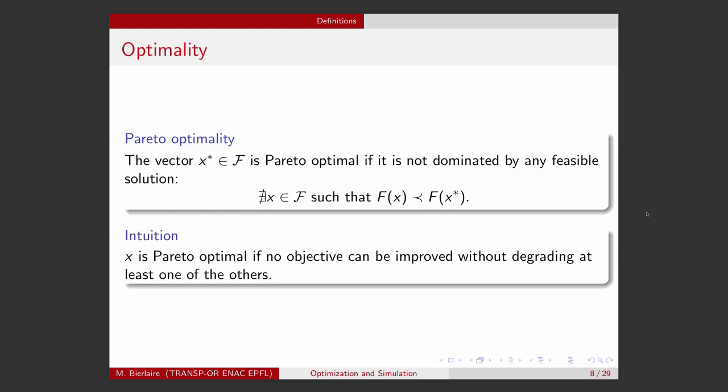In the context of multi-objective optimization, we need to redefine the concept of optimality. And the concept that is introduced is called the Pareto-optimality. The definition is the following. A vector X-star, a feasible vector X-star, will be said to be Pareto-optimal if there is no feasible solution that dominates X-star. So, the intuition is that X will be Pareto-optimal if there is no objective that can be improved without degrading at least one of the others.